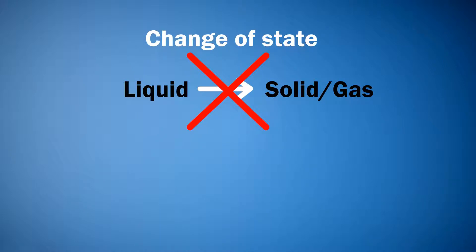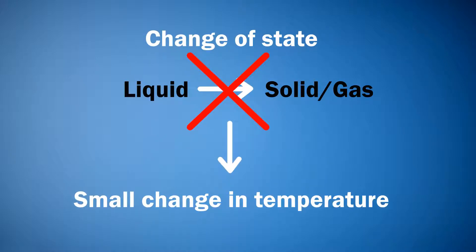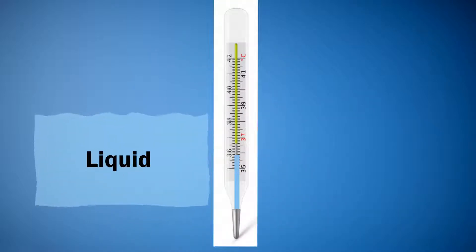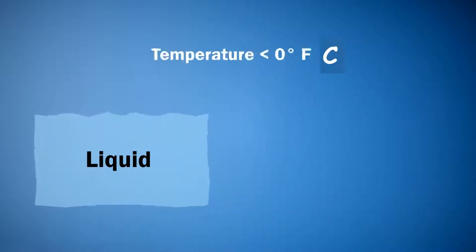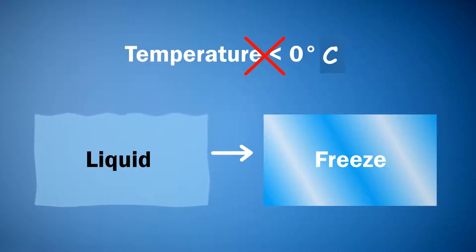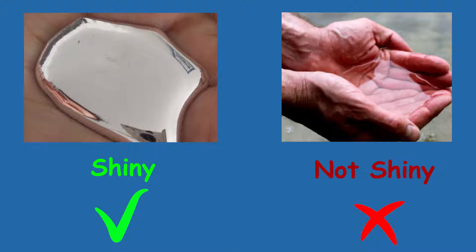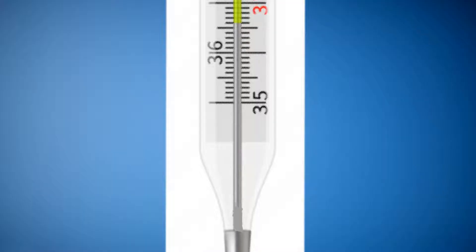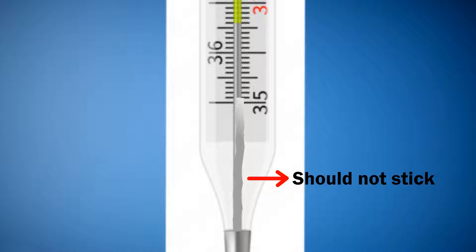The liquid should not change state with a very small change in temperature. For example, if we use water as thermometer liquid, we cannot measure temperatures below 0 degrees as water will freeze. The liquid should be shiny so that it can be seen by viewers easily. There should not be any stickiness between the walls of the thermometer and the liquid, otherwise expansion of the liquid will be disturbed and we will not get accurate results.